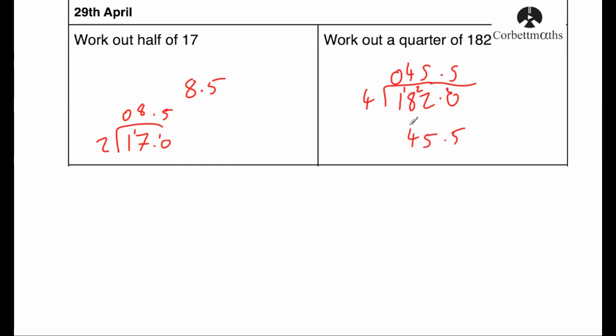And let's check that by doubling. Doubling 45.5 — well, doubling 45 is 90, so doubling 45.5 would be 91, and doubling that again would be 182, and that's it.